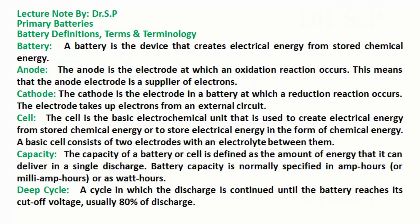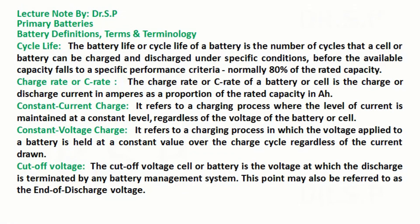Capacity: the capacity of a battery or cell is defined as the amount of energy that it can deliver in a single discharge. Battery capacity is normally specified in amp hours, milliamp hours, or watt hours. Deep cycle: a cycle in which the discharge is continued until the battery reaches its cutoff voltage, usually 80 percent of discharge.